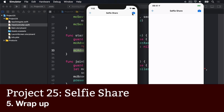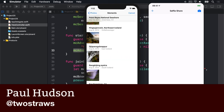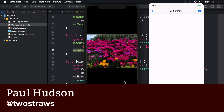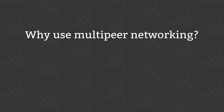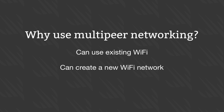Multi-peer connectivity is something that used to be awfully hard, but in iOS it's less than 150 lines of code to produce this entire app, and over half of that is code for the collection view and the image picker. The advantage it has compared to traditional data sharing over Wi-Fi is that multi-peer can use an existing Wi-Fi network, or can silently create a new Wi-Fi network, or even a Bluetooth network, depending on what's available. All this is an implementation detail that Apple solves on your behalf — we don't have to care how it works.